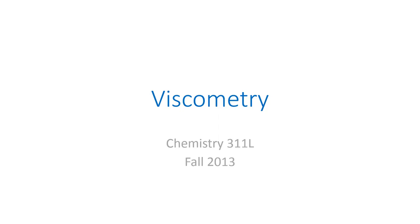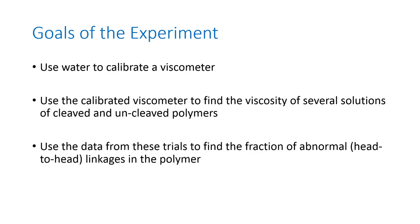This is the introduction to the viscometry experiment for CHEM 311L. The goals of this experiment are to first use water to calibrate a viscometer, and then to use that calibrated viscometer to find the viscosity of several polymer solutions.